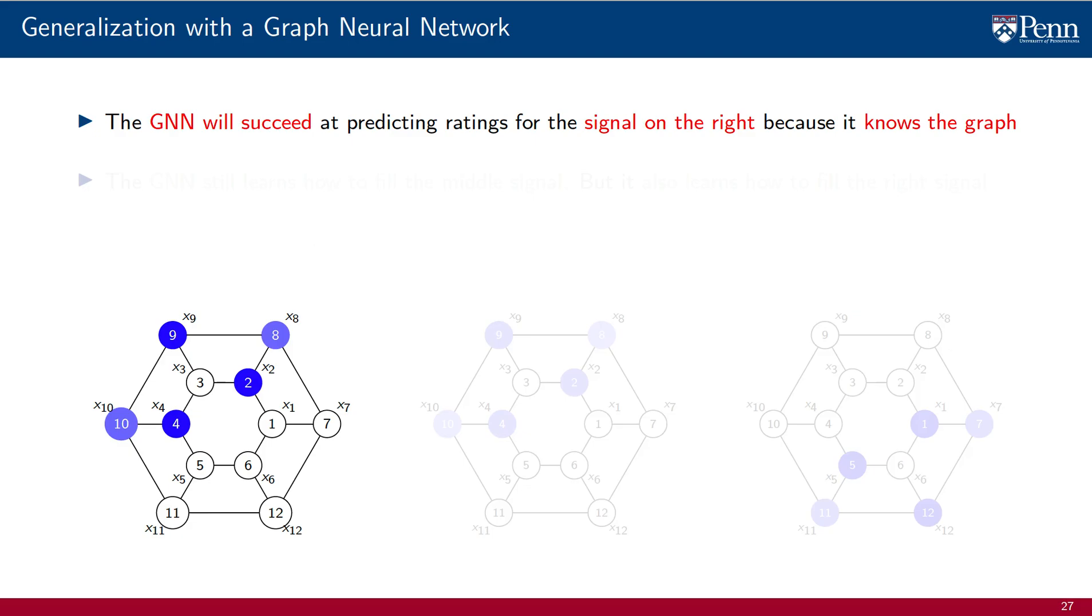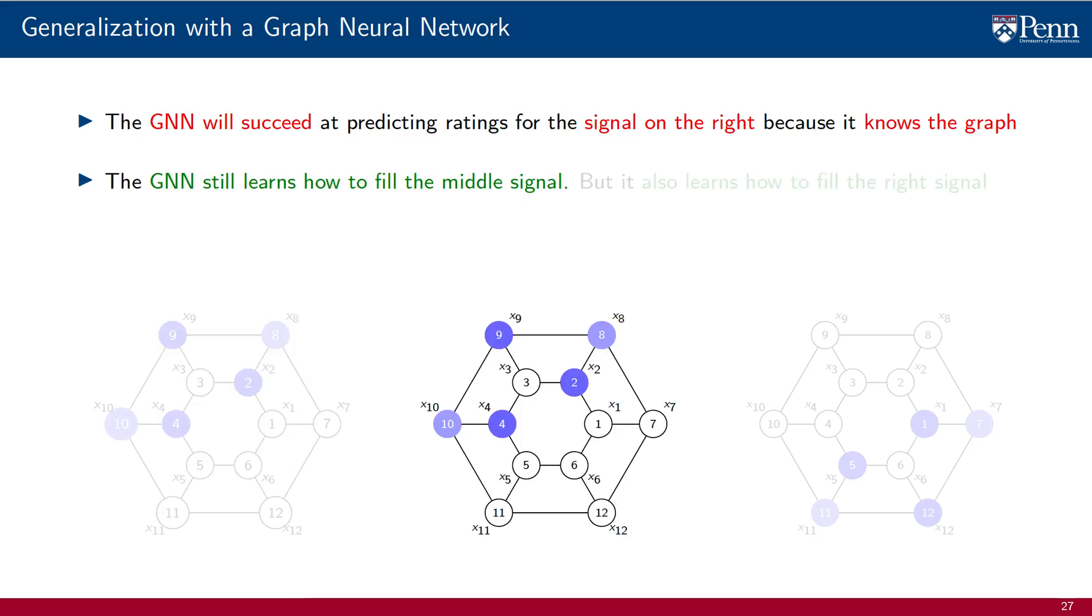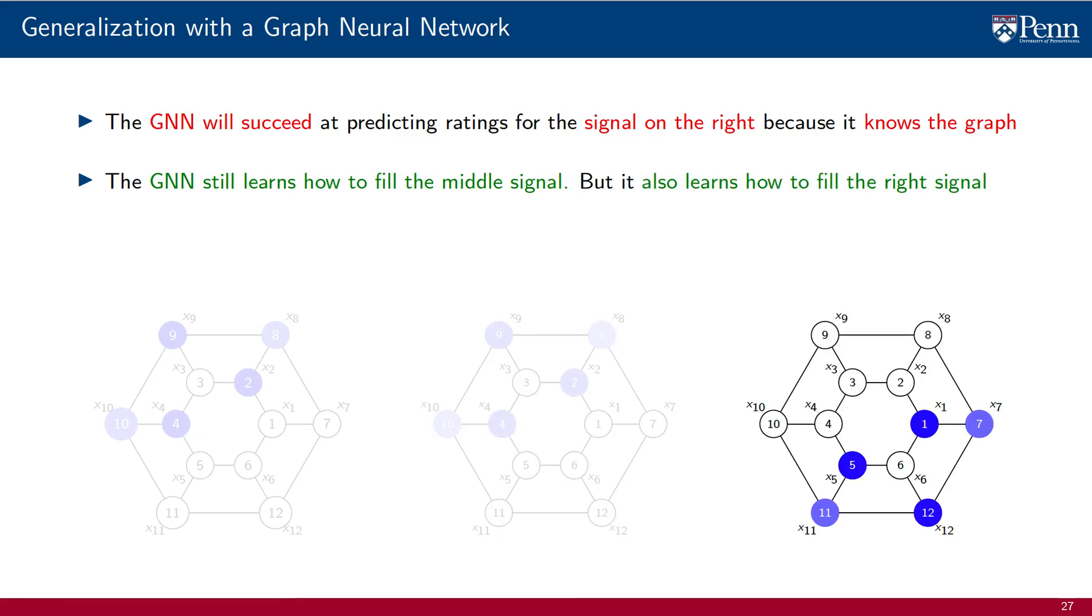Indeed, if we learn how to fill the signal on the left using a GNN during training, the GNN will also learn how to fill the signal in the middle, same as the FCNN, but it will also learn how to fill the signal on the right, which the FCNN did not.